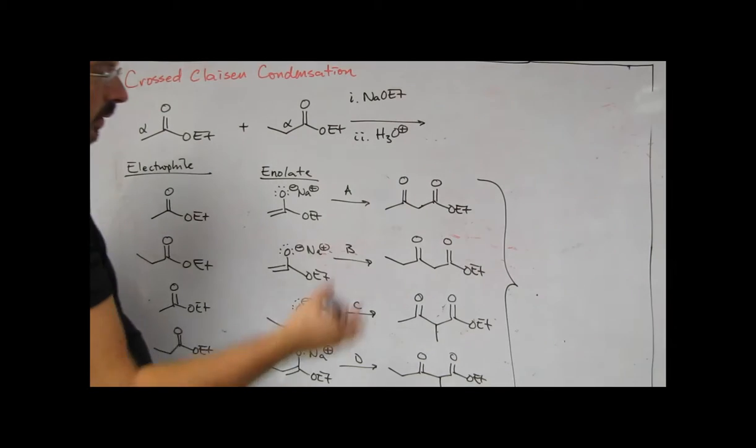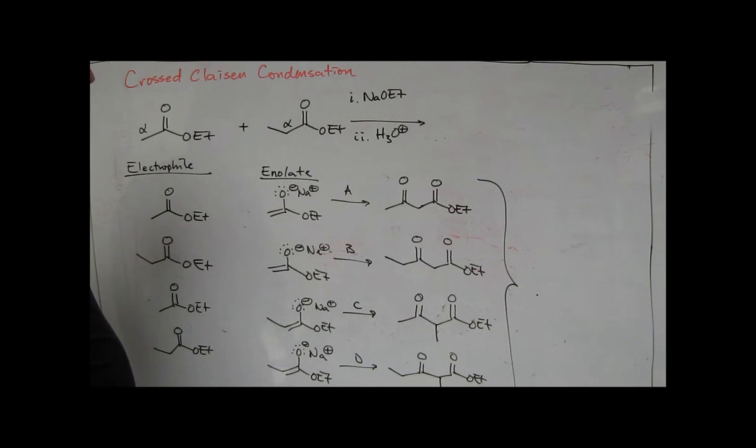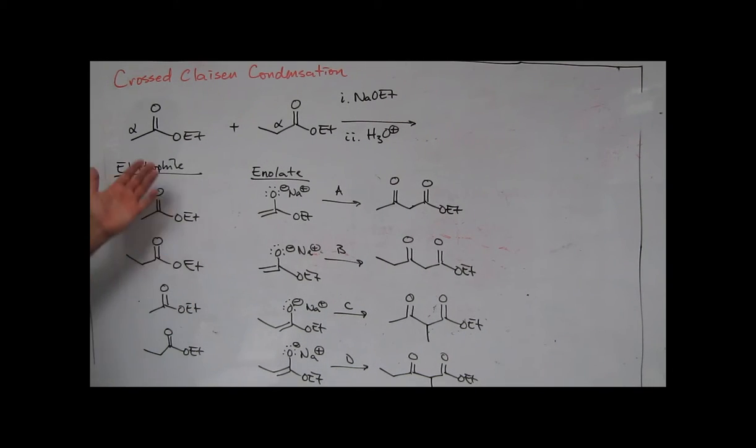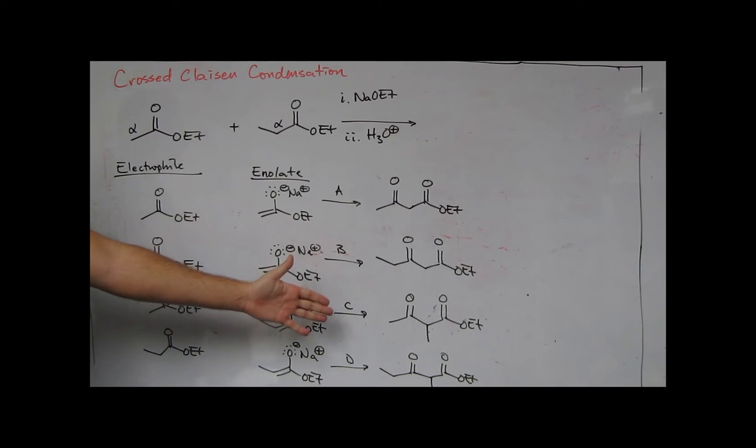So you would likely get a statistical distribution of these. And looking at the functionality, they're all beta-keto esters. So this reaction is likely going to produce four compounds. And so how would we determine the ratio in which they're formed? It would likely be a statistical distribution of them.